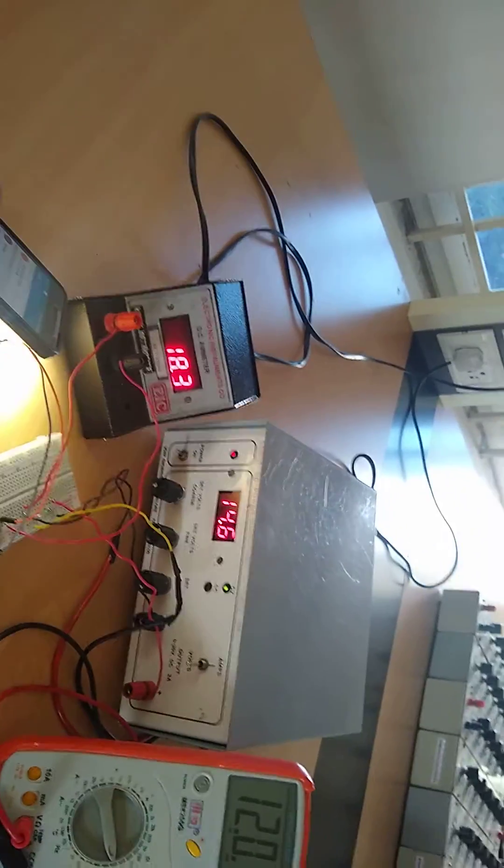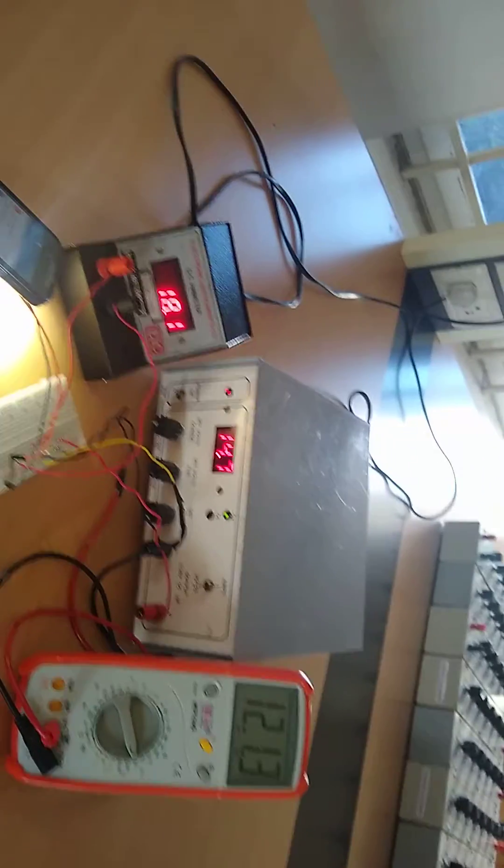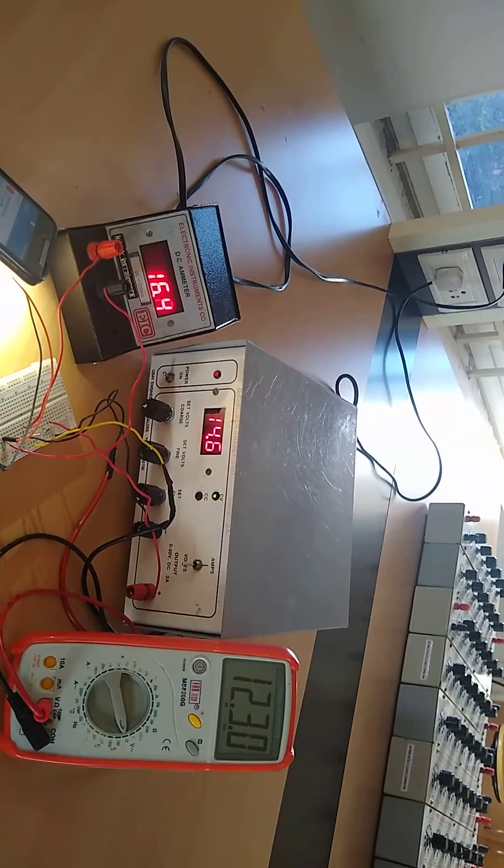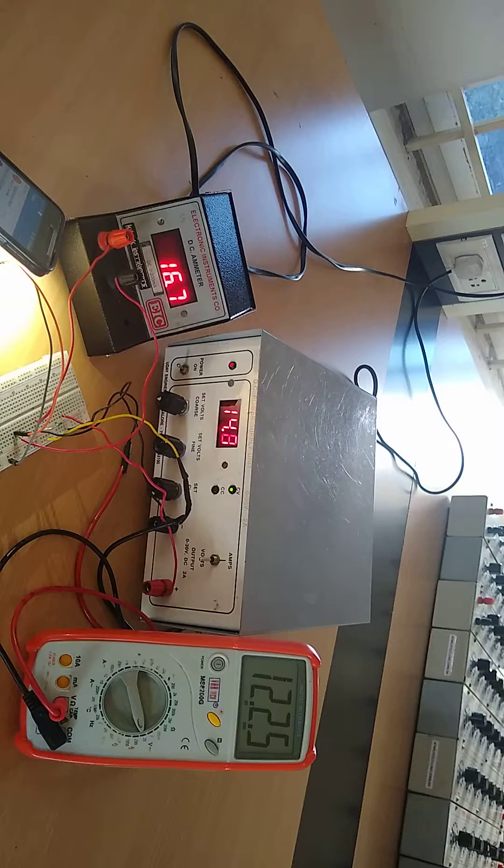Now light falling on the LDR. Light intensity is increasing. We can note down the voltage and the current using voltmeter and ammeter. Voltage is decreasing and the current is increasing.